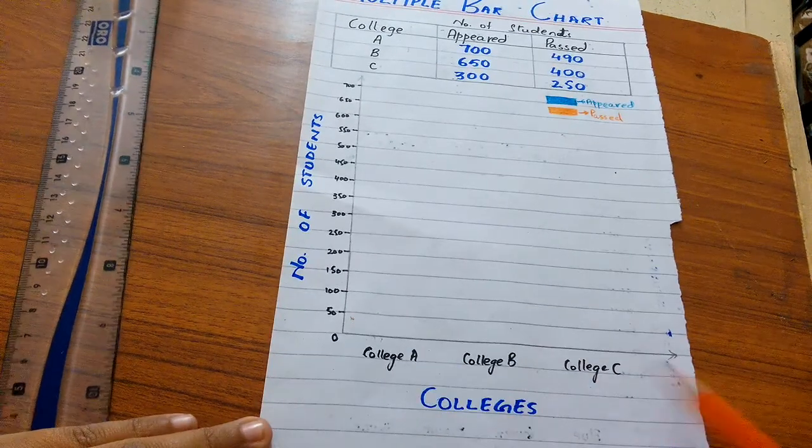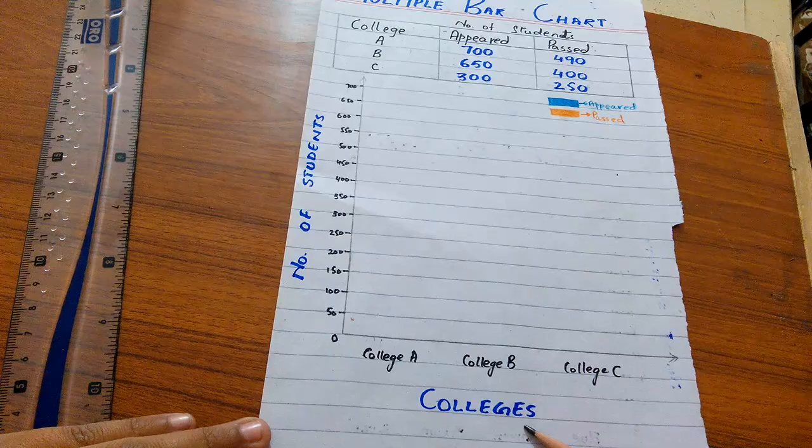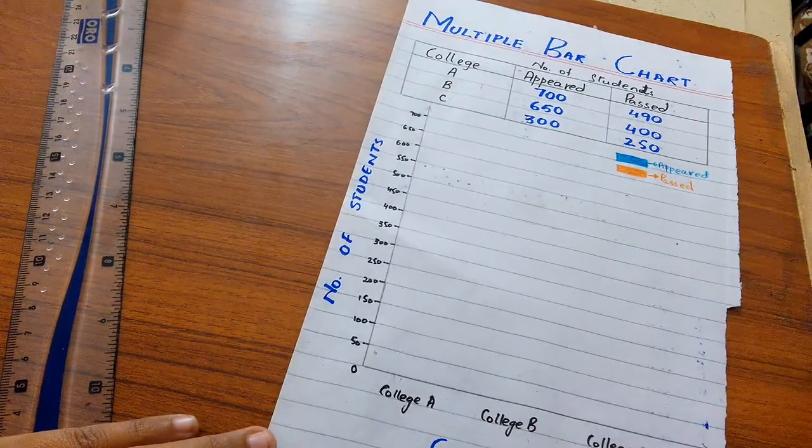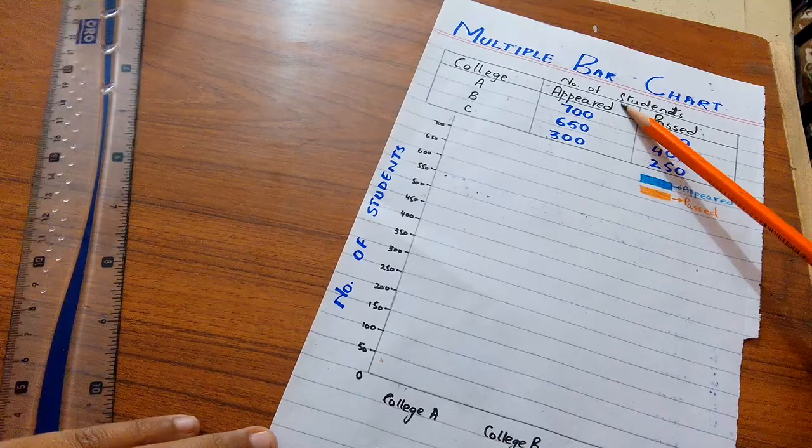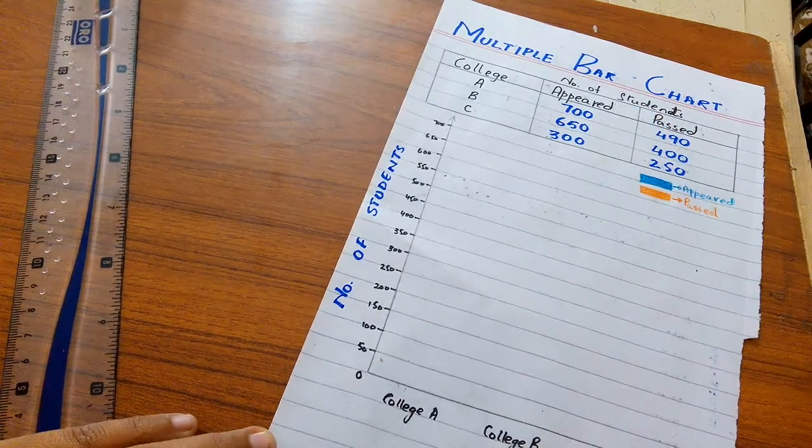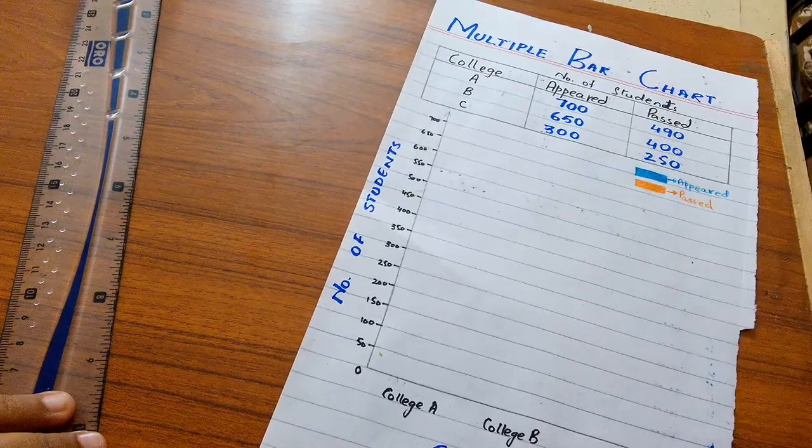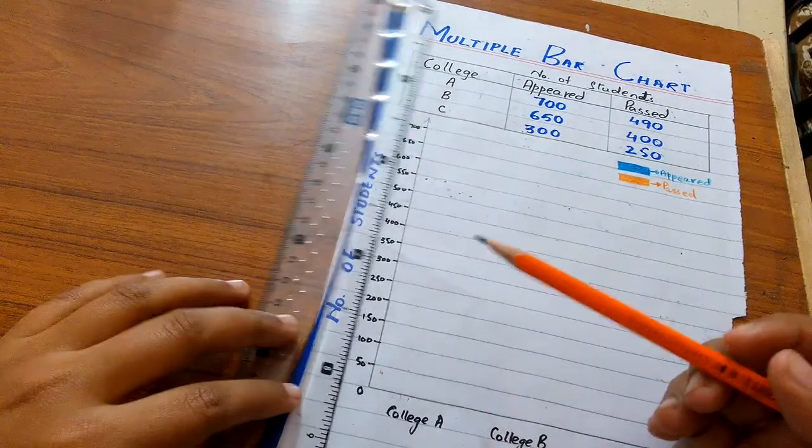At horizontal axis I take college A, college B, college C. And at vertical axis we take frequency, which is our number of students. Now I am going to construct a multiple bar chart.